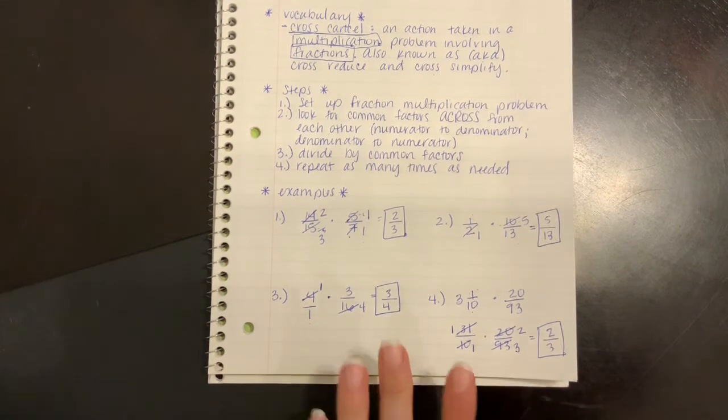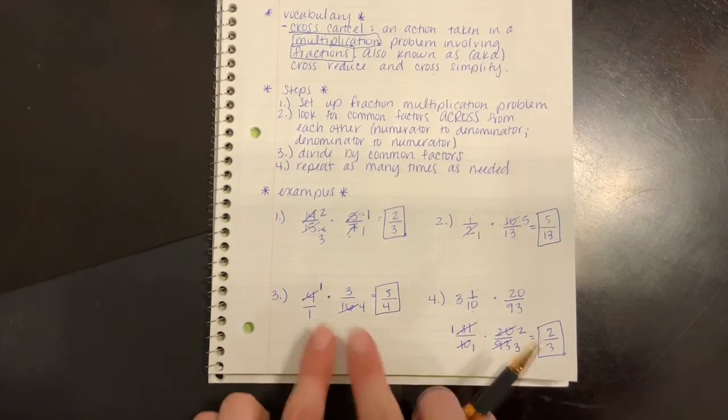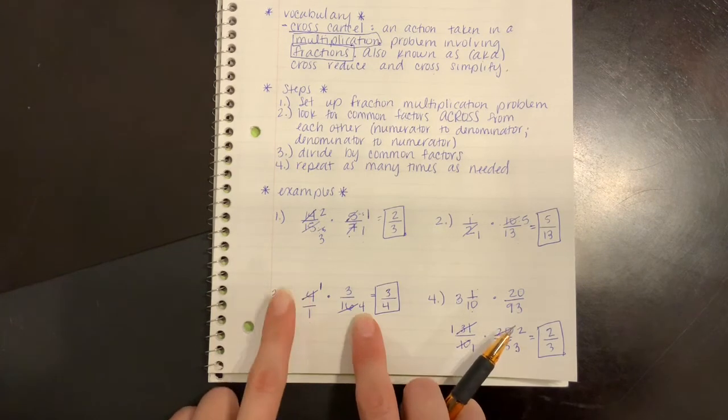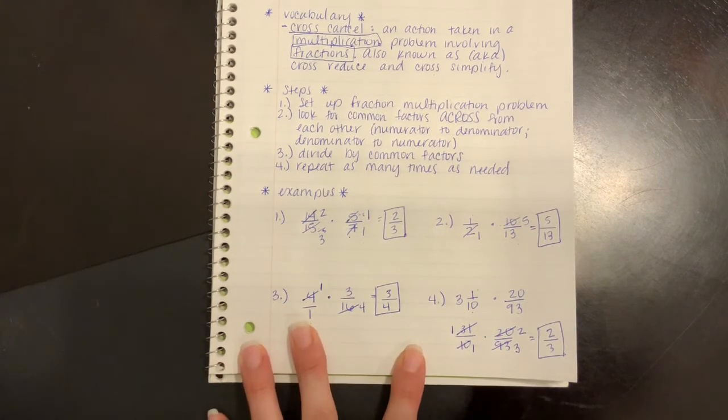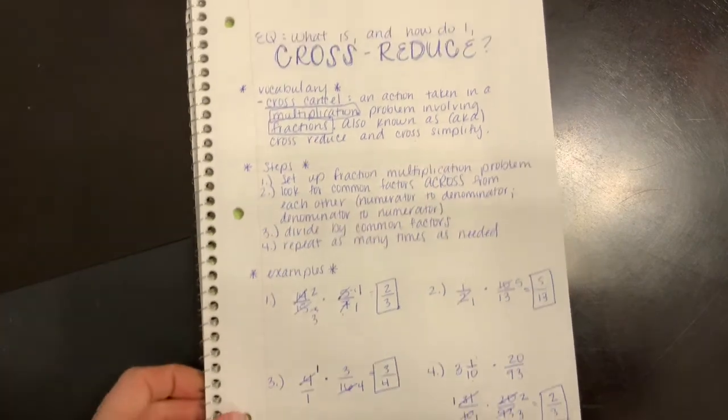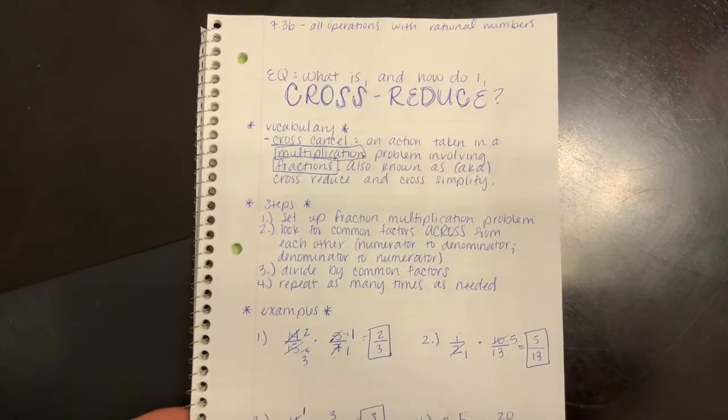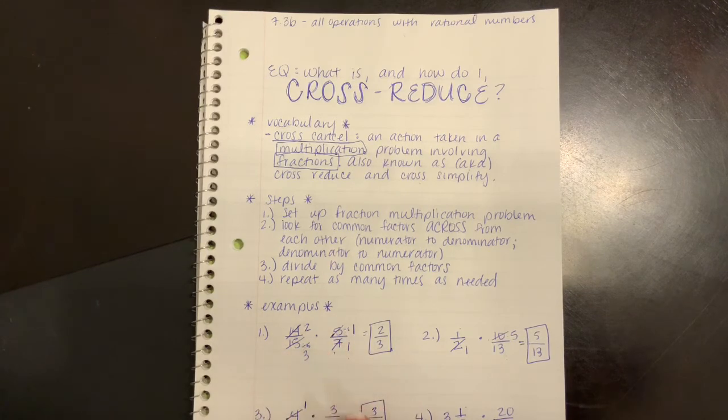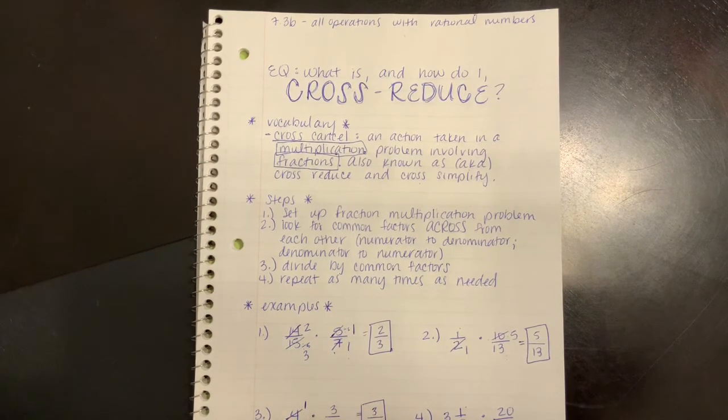The biggest trick with this, guys, is looking across and finding your GCF, your greatest common factor, and then reducing both numbers by that. That's it, guys. If you need help understanding any of this, please reach out. I really want you guys to be able to do this in math. It will make your fraction life so much easier. Thank you.